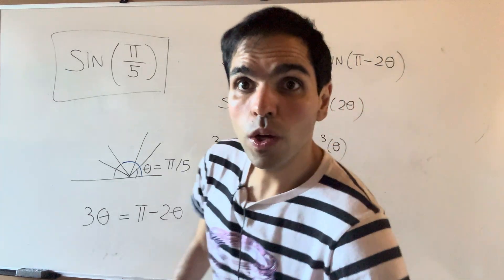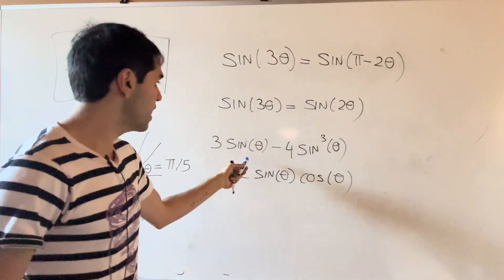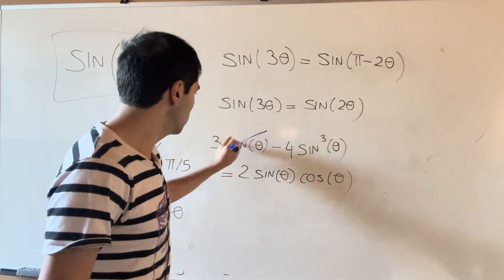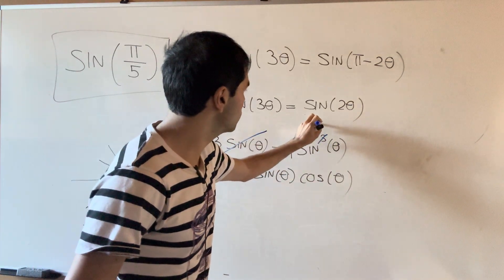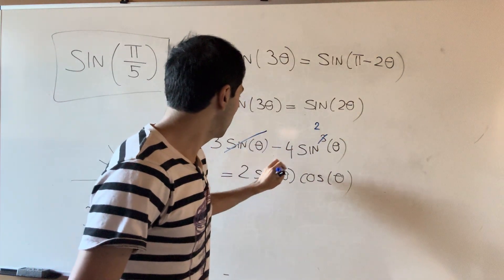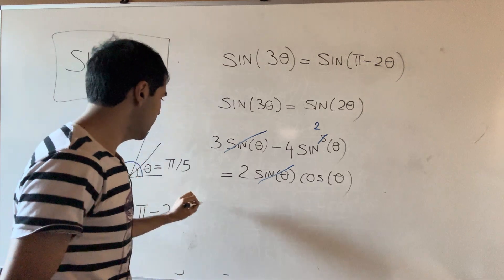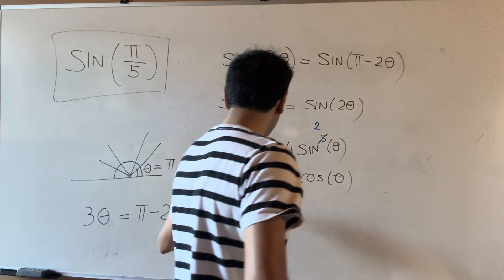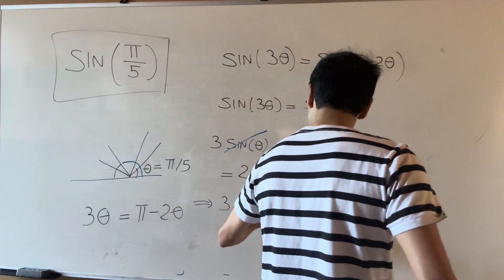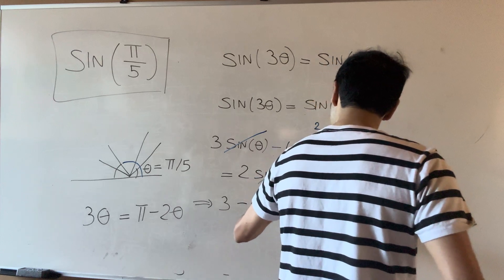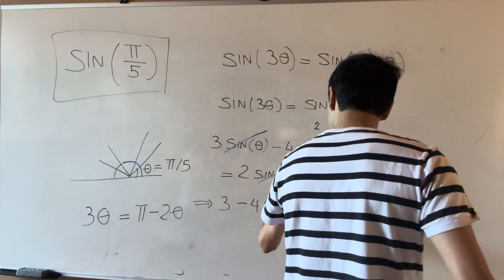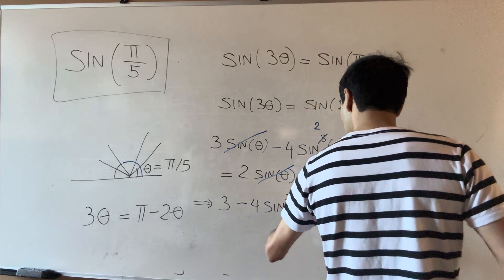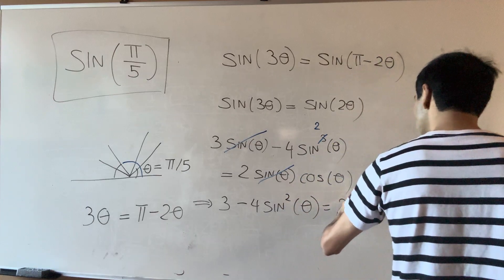The cool thing we can do here is cancel out the sines. This becomes squared, and in the end what we have is three minus four sine squared theta equals two cosine theta — not cubed, but squared.